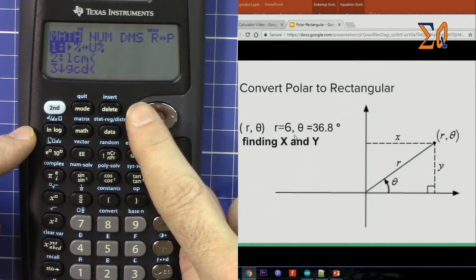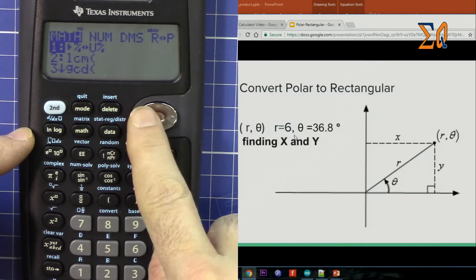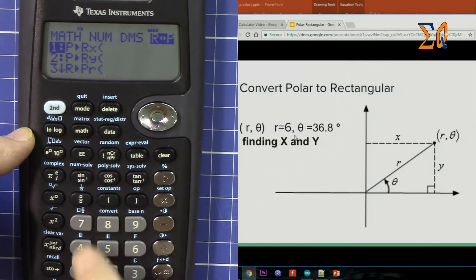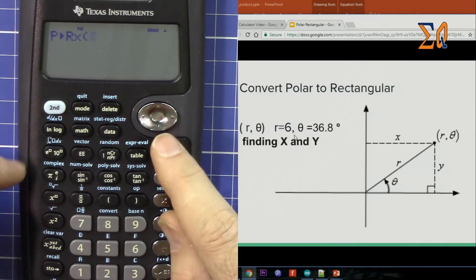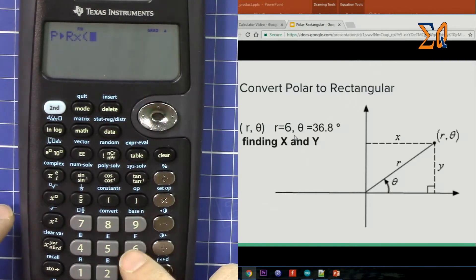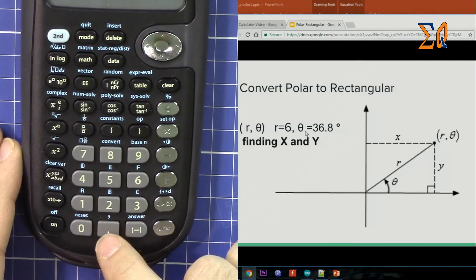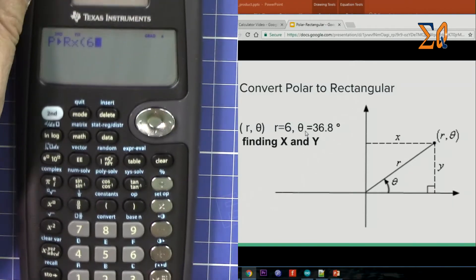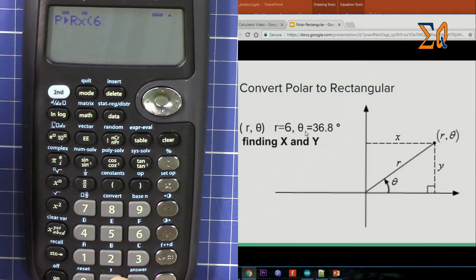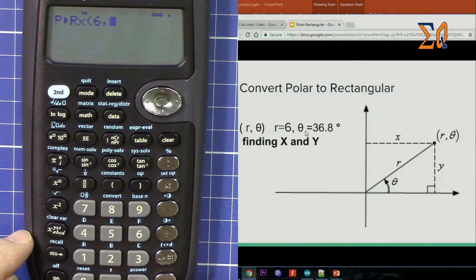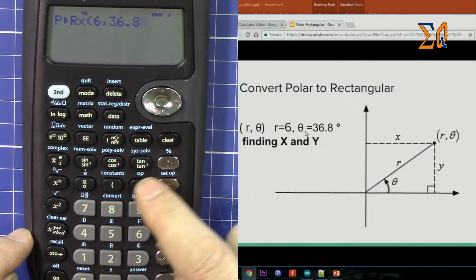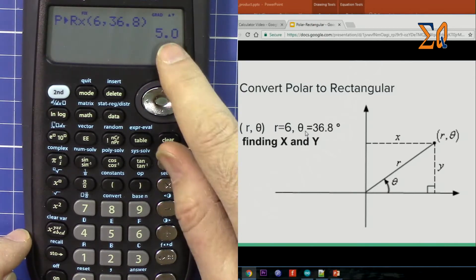Clear. Now press math and we go to the reverse and then one. So we have polar to rectangular. We want to get our X, so 6, and then comma, second function, and then this button that is the comma, and then 36.8, close. So now it gives us the X.